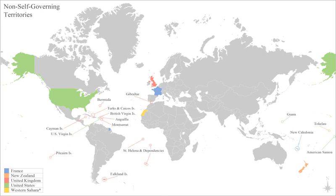In history, a colony is a territory under the immediate complete political control of a state, distinct from the home territory of the sovereign. For colonies in antiquity, city-states would often found their own colonies. Some colonies were historically countries, while others were territories without definite statehood from their inception. The metropolitan state is the state that rules the colony.